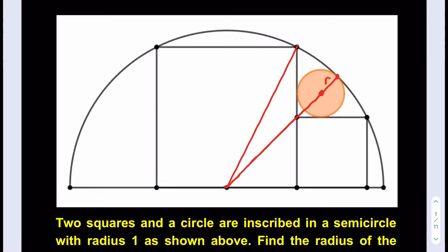Let's suppose the radius of the circle is r. We know the radius of the semicircle is one. In a previous video, we calculated using the Pythagorean theorem the side length of the larger square. Calling this length x and the other leg 2x, we find x equals √5/5, so the side length of the larger square is 2√5/5.